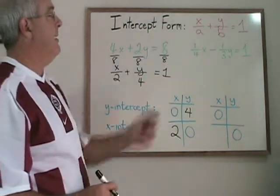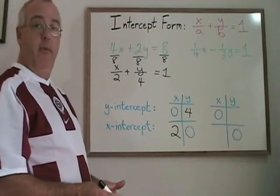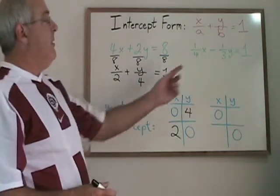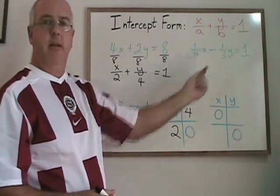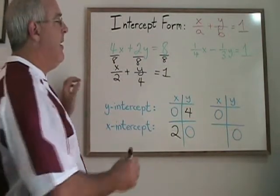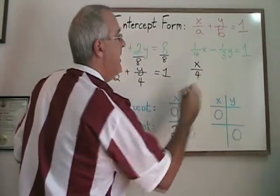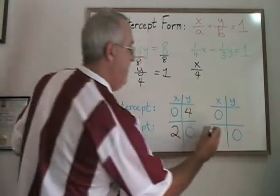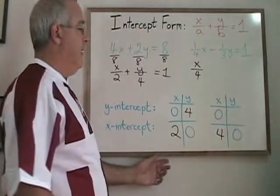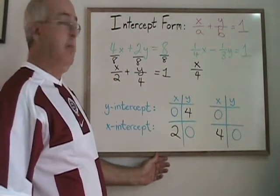Example 2 is already mostly written in intercept form, but there is the complication that there is a minus instead of a plus here. I'm going to turn 1 quarter x into x over 4, and I can see that my a is equal to 4. I can put my x-intercept into the table of values.